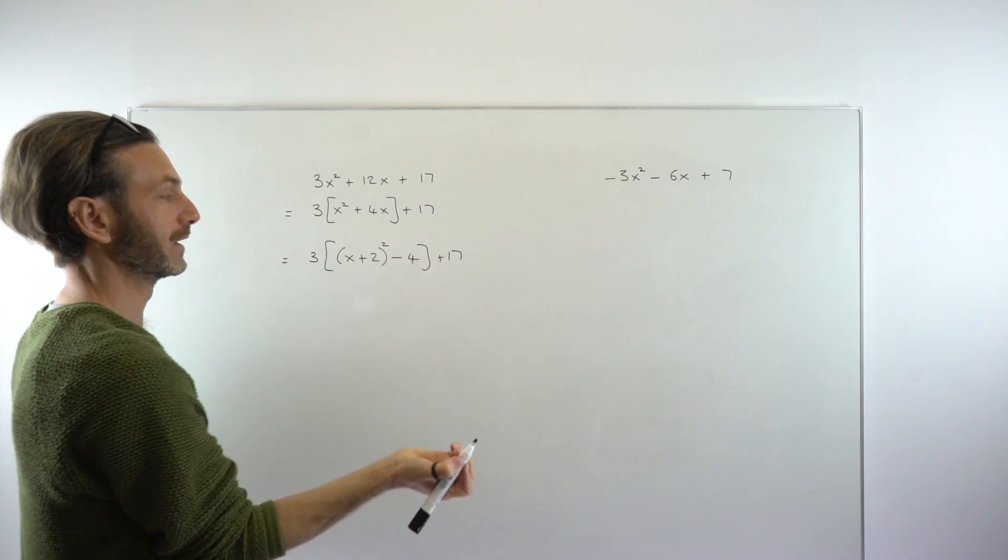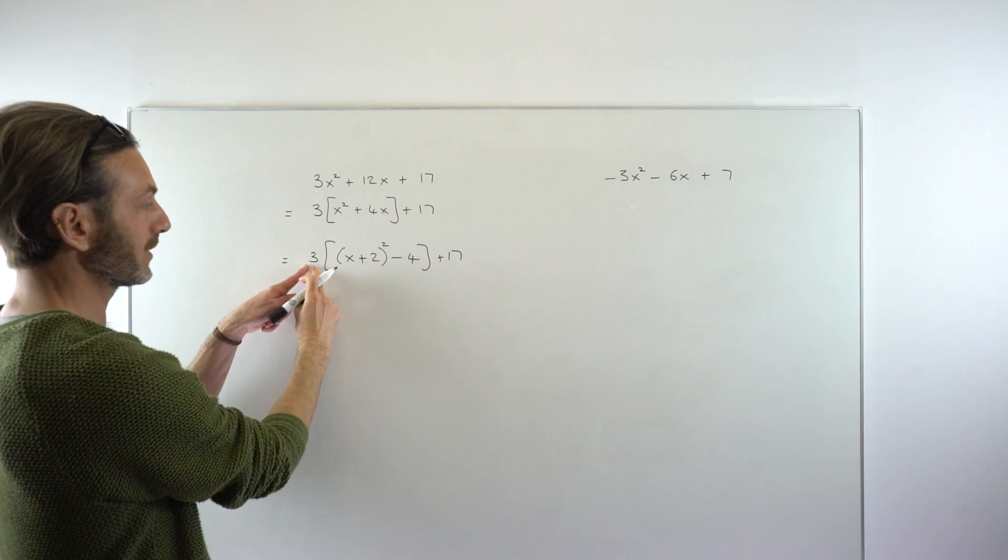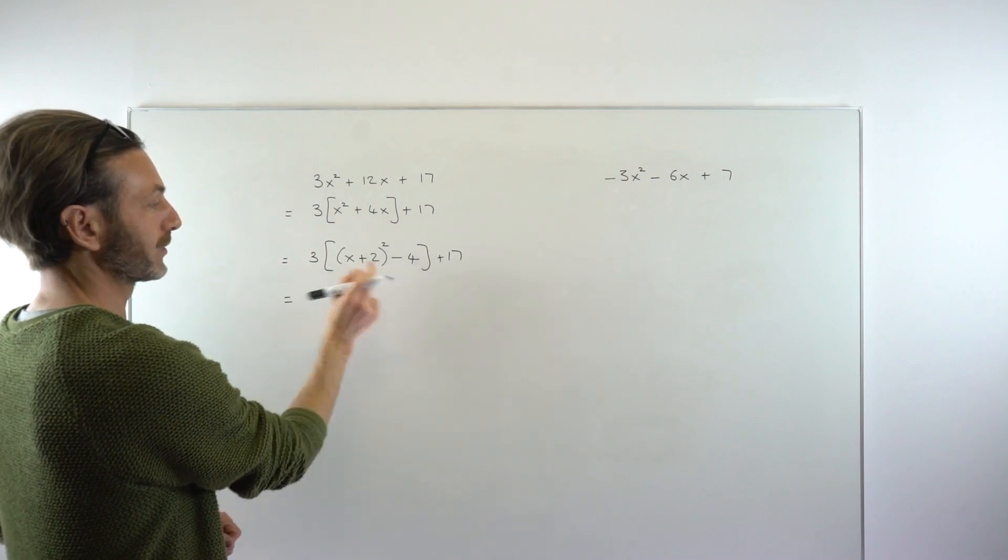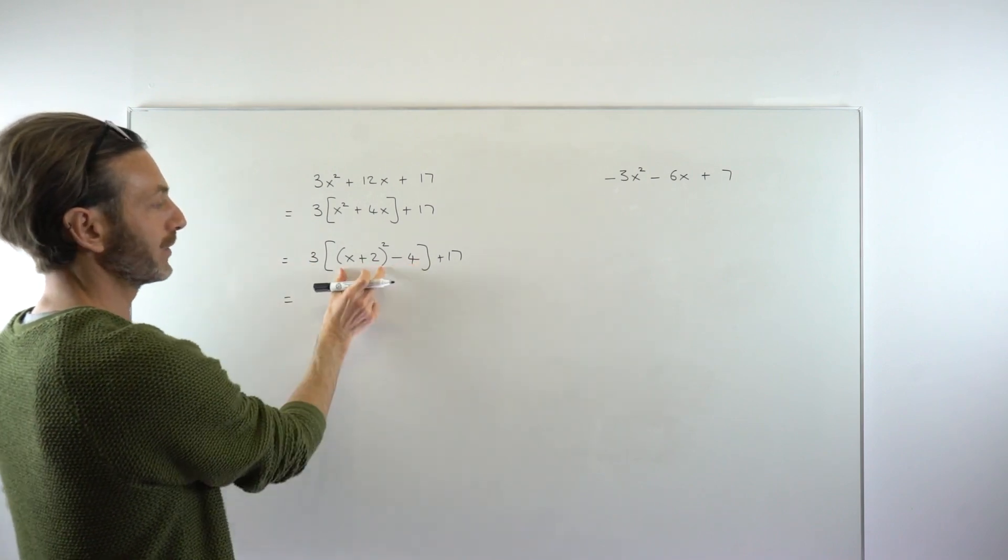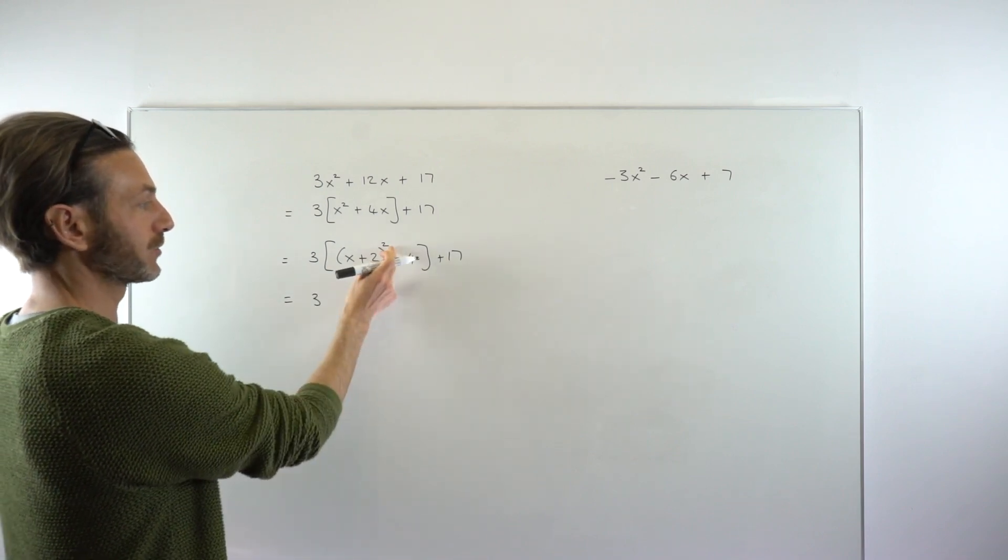Then we expand the square bracket. The 3 has to multiply to this and the 3 has to multiply to the minus 4, but when you multiply the 3 to this, you can't actually multiply it into the bracket because it's got a power on it.